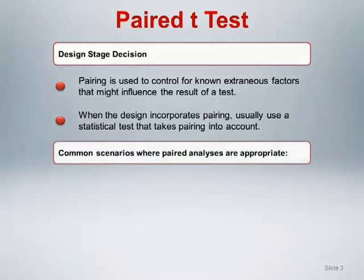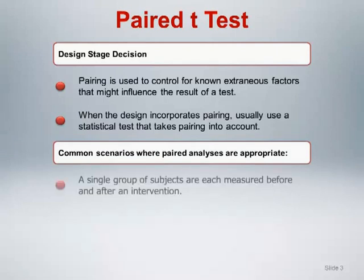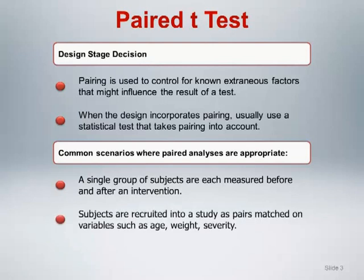Let's discuss a couple of scenarios where paired analyses are appropriate. The first is a single group of subjects measured before and after an intervention. The second is two groups of subjects recruited into a study as pairs matched on variables such as age, weight, severity, etc. Let's examine each of these scenarios in turn, discussing the data structure and hypothesis of interest.